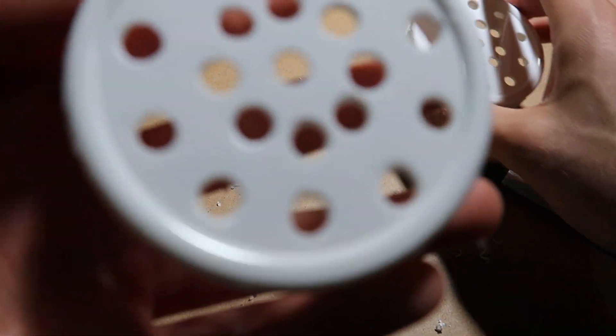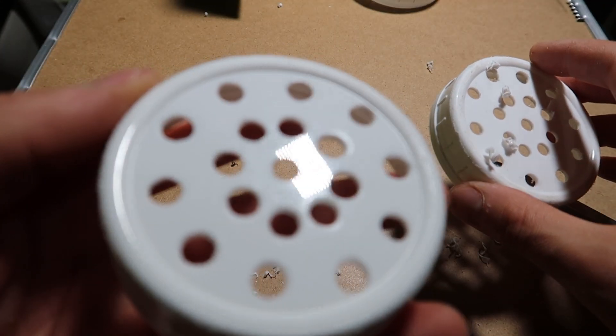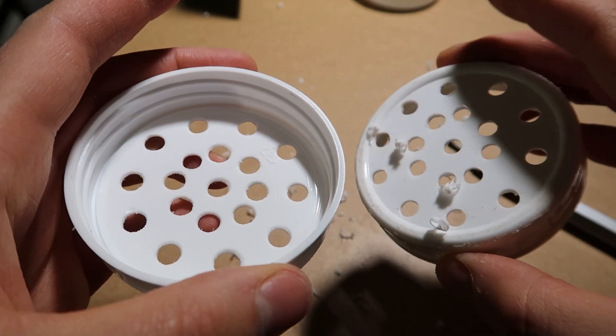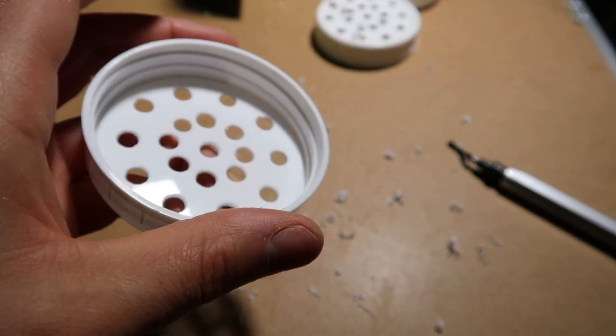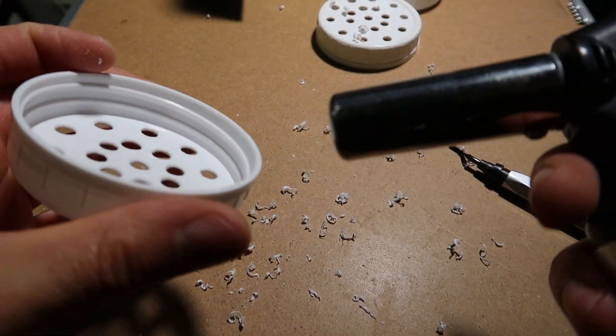Then once that's done it'll look like this. This is the before and after and this is where a lighter or a blowtorch will come in handy. Light heat just to singe up some of those loose hairs.